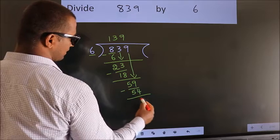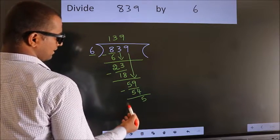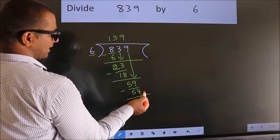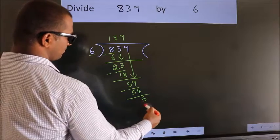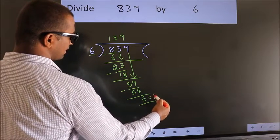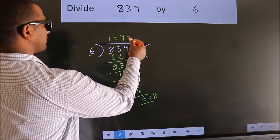Now we subtract, we get 5. No more numbers to bring down. So we stop here. This is our remainder. This is our quotient.